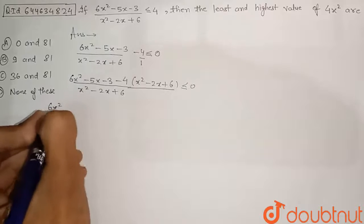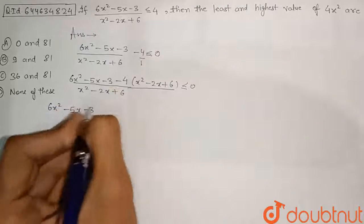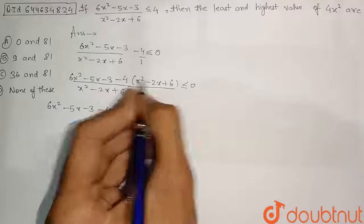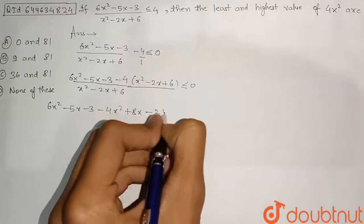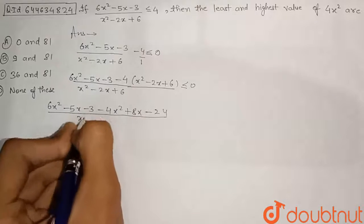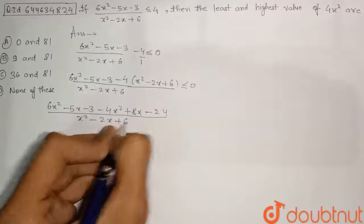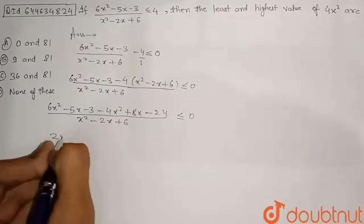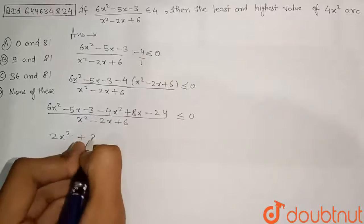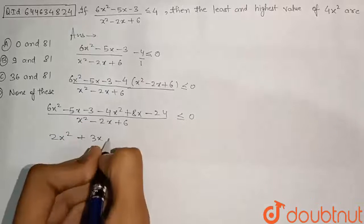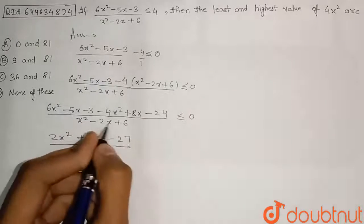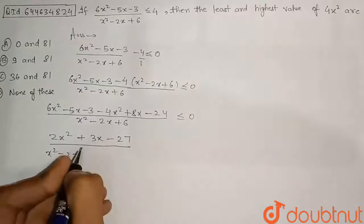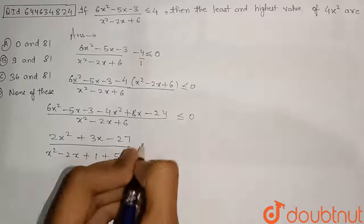Expanding the numerator: 6x² - 5x - 3 - 4x² + 8x - 24. Simplifying: 6x² - 4x² = 2x², and -5x + 8x = +3x, and -3 - 24 = -27. So the numerator becomes 2x² + 3x - 27. The denominator is x² - 2x + 6, which we can split the constant 6 as 1 + 5, giving x² - 2x + 1 + 5.